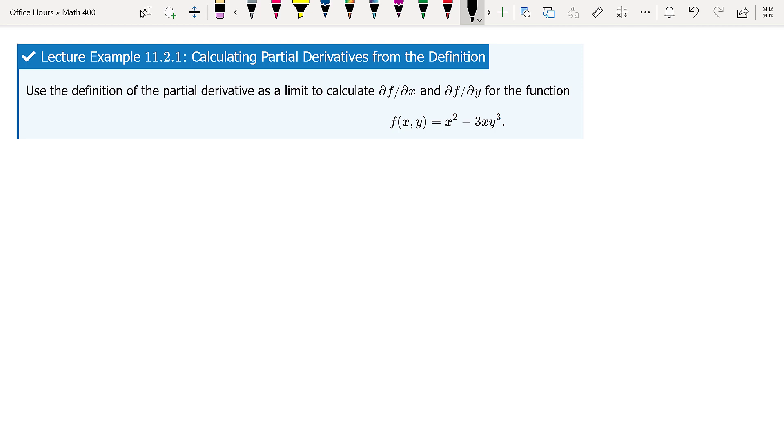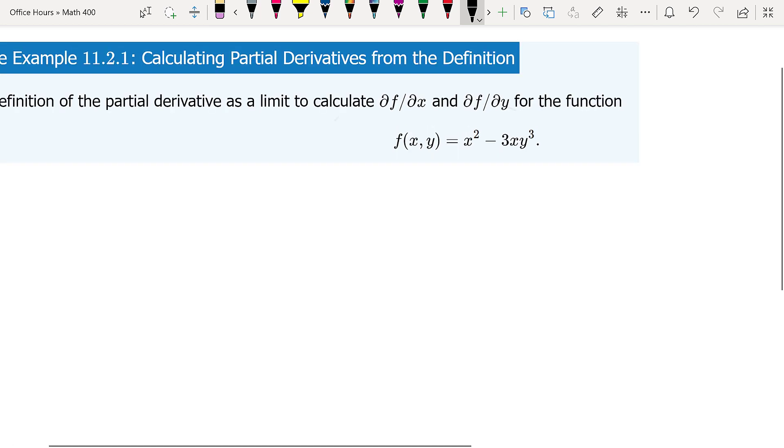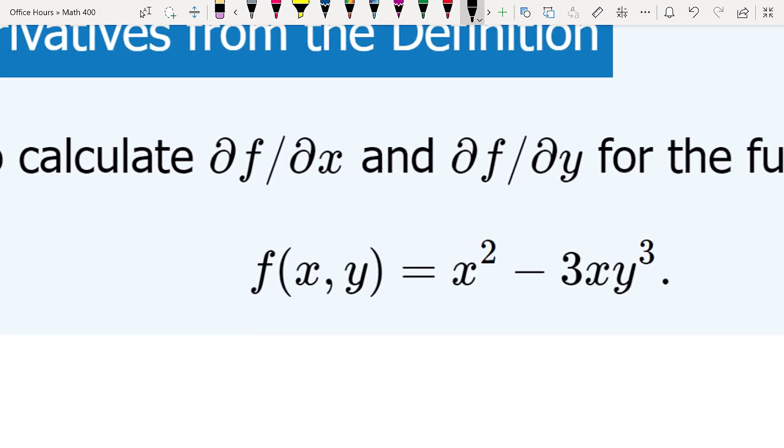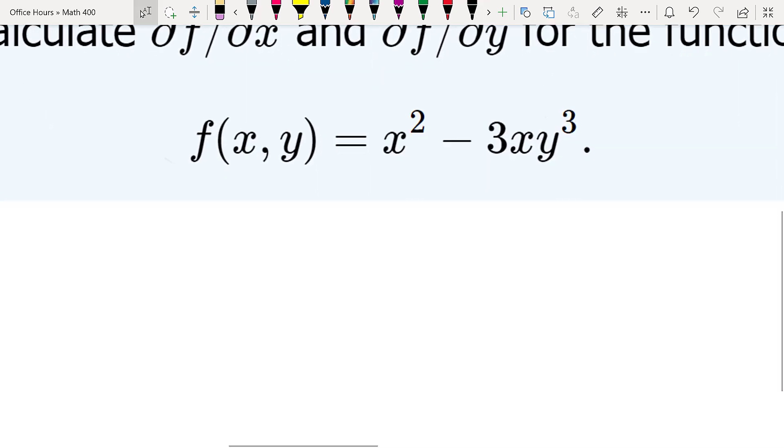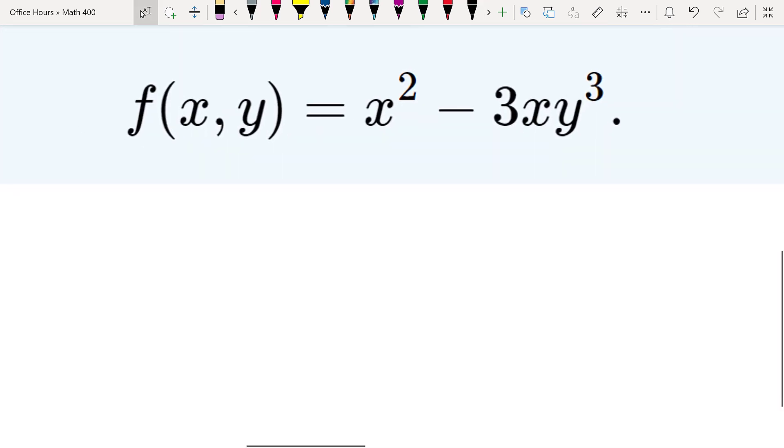This assumes you're familiar with the limit definition of a derivative in general and the limit definition of a partial derivative. Let's tackle the partial of f with respect to x and the partial of f with respect to y for the function f(x,y) = x² - 3xy³.